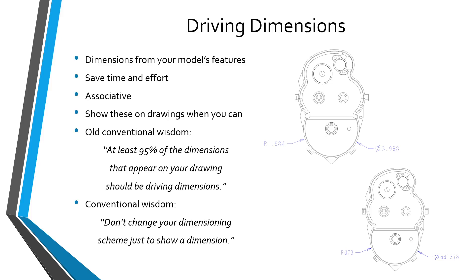There is also conventional wisdom that you should not change your dimensioning scheme just to show a dimension — and that's correct. We might want a diameter dimension for inspection with calipers, but if the driving dimension is a radius, and someone created that model with that design intent using a radius dimension, you really should not go back and change it to a diameter dimension. When you can, use driving dimensions, but don't change your model just to show a driving dimension on the drawing.